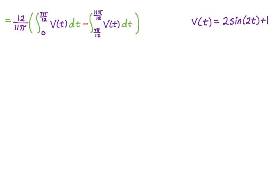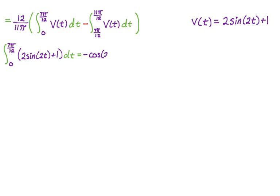v(t) = 2sin(2t) + 1. I'll integrate piece by piece. For the integral from 0 to 7π/12: the integral of 2sin(2t) — using u-substitution with u = 2t, du = 2 dt — gives negative cosine(2t). The integral of 1 is just t. So the antiderivative is negative cosine(2t) + t, evaluated from 0 to 7π/12.